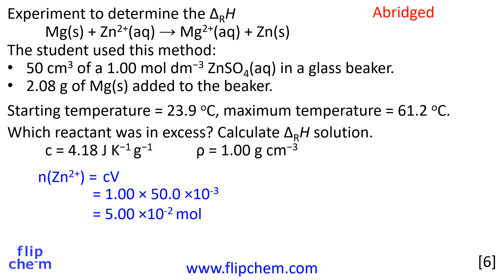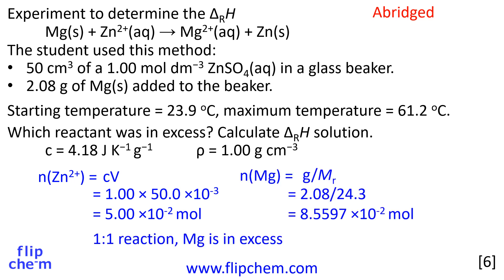First, let's work out which reactant is in excess. We can find the amount of zinc ions from concentration and volume. This works out to be 5.00 × 10⁻² moles. The amount of magnesium is found using mass and molar mass. This works out at 8.5597 × 10⁻² moles. It's a one-to-one reaction, so the magnesium is in excess.